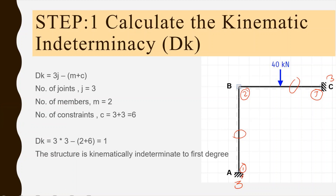We also identify the number of constraints, meaning the number of reactions at each support. This structure has 2 fixed supports, so the number of reactions is 3 for each support, giving a total of 6 constraints. Applying these values into the equation for degree of freedom or kinematic indeterminacy — 3j minus (m plus c) — we get a degree of freedom equal to 1. The structure is kinematically indeterminate to the first degree.